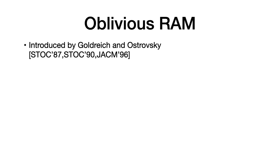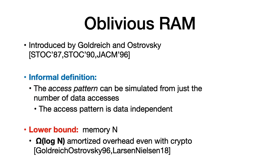Oblivious RAMs were introduced by Goldreich and Ostrovsky. The informal definition says that the access pattern — the memory locations that the client accesses — can be simulated and they are data independent. As we mentioned, Oblivious RAM introduces some overhead, and we have a known lower bound that this overhead is at least log n for a logical memory of size n. That is, every access in the original program is translated to at least log n operations amortized. This lower bound holds even if we assume crypto.